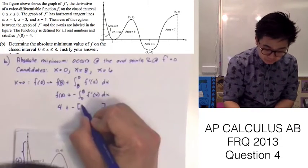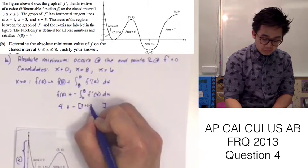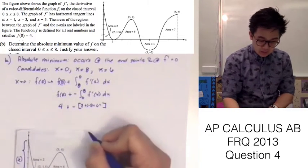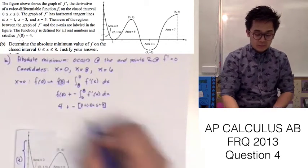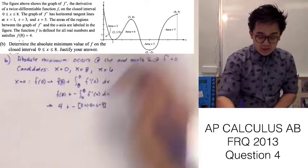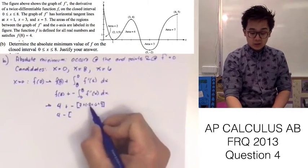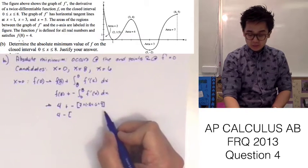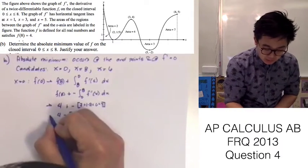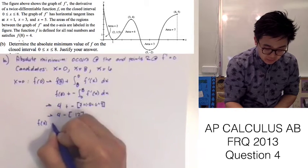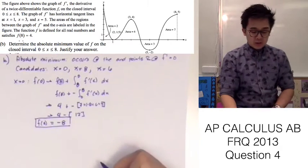We know f(8) = 4. Now we sum the areas under the curve from 8 back to 0: we have 7, add negative 3, plus 6, plus 2 — these are the signed areas from 8 to 0. So f(0) = 4 minus (7 − 3 + 6 + 2) = 4 minus 12, which equals negative 8. So f(0) = −8.